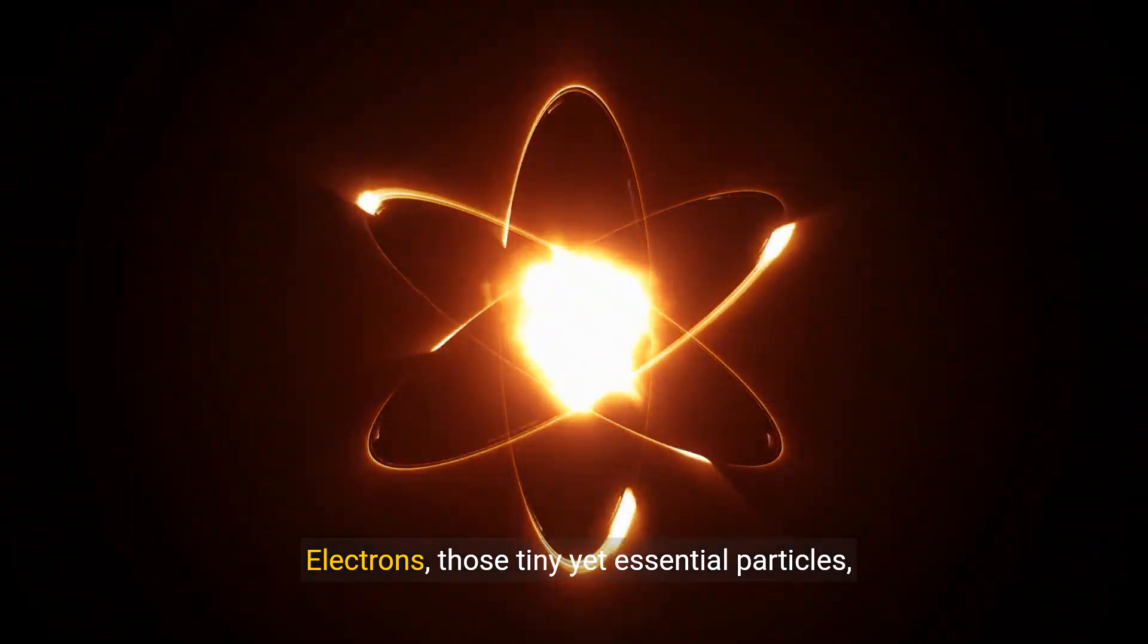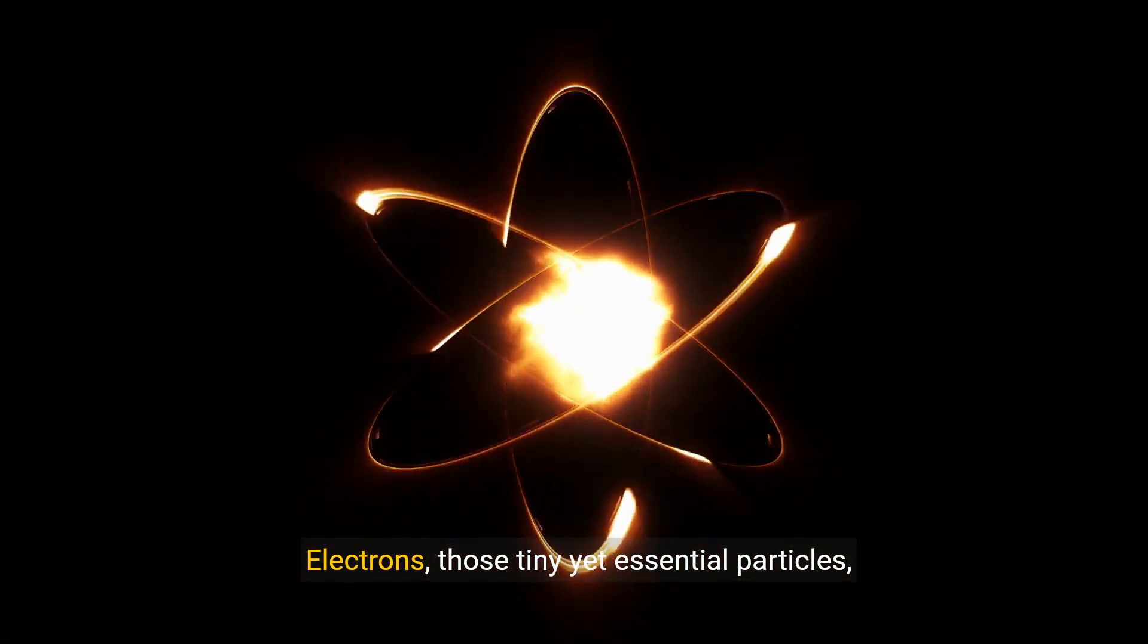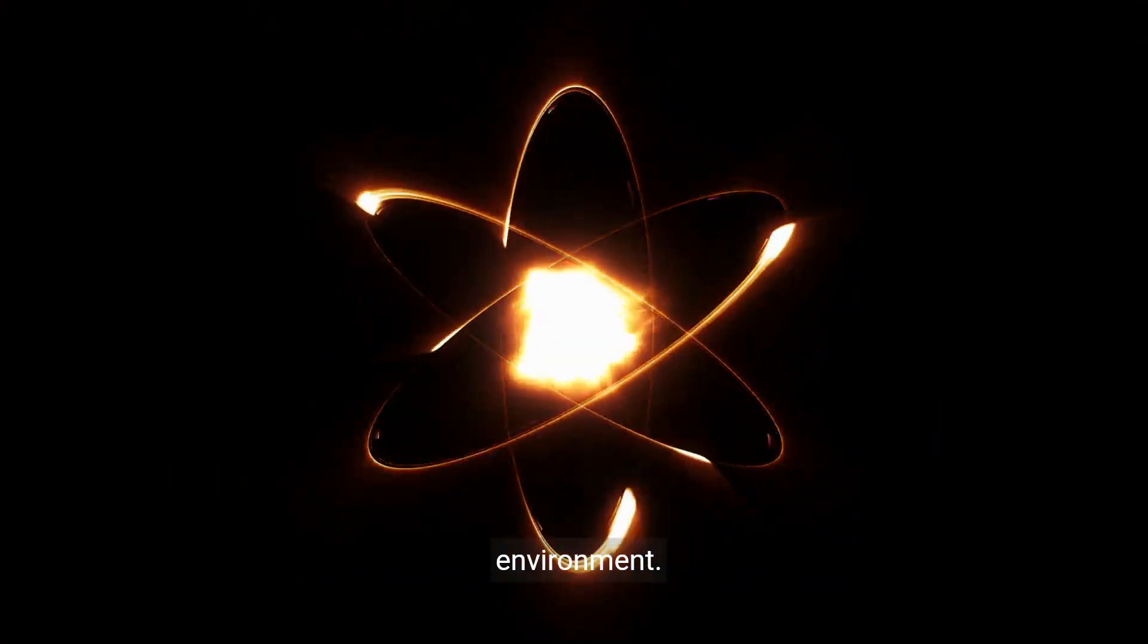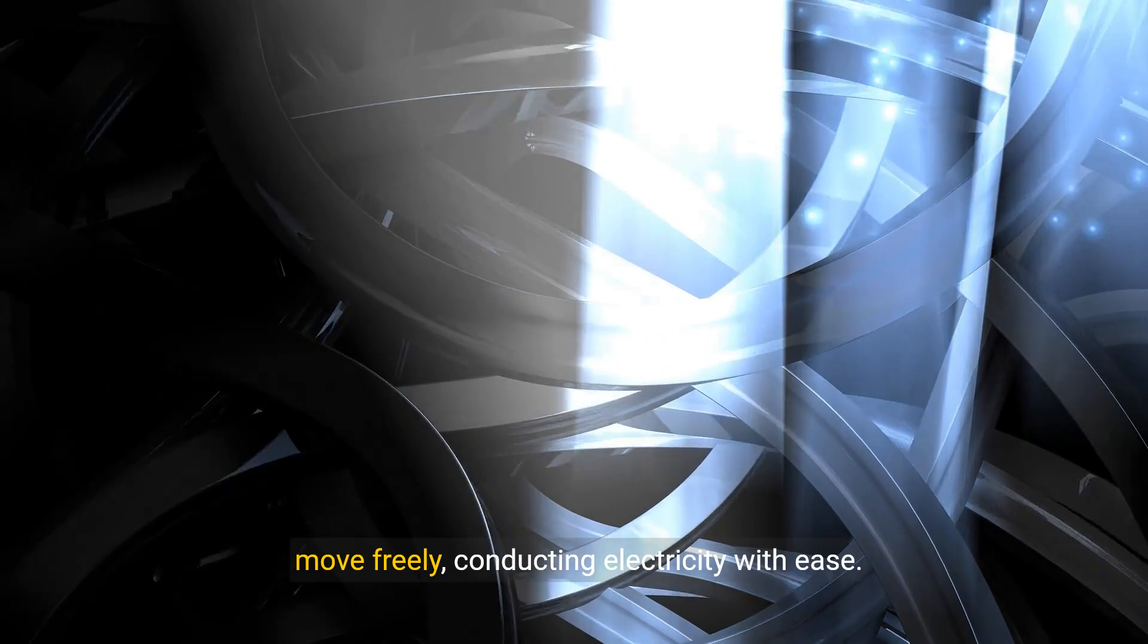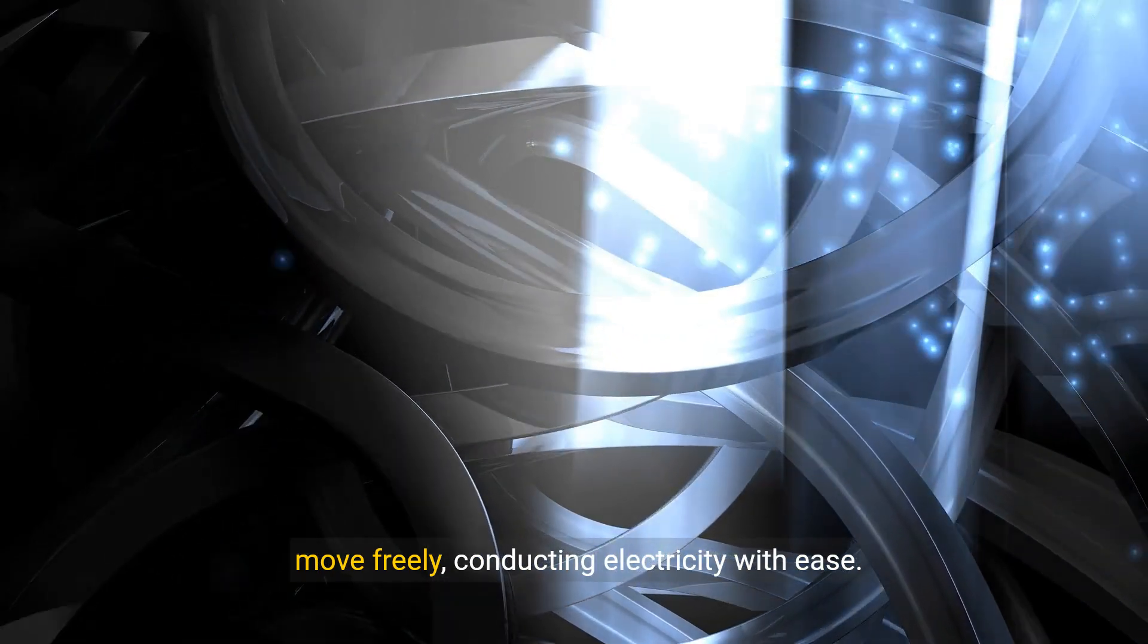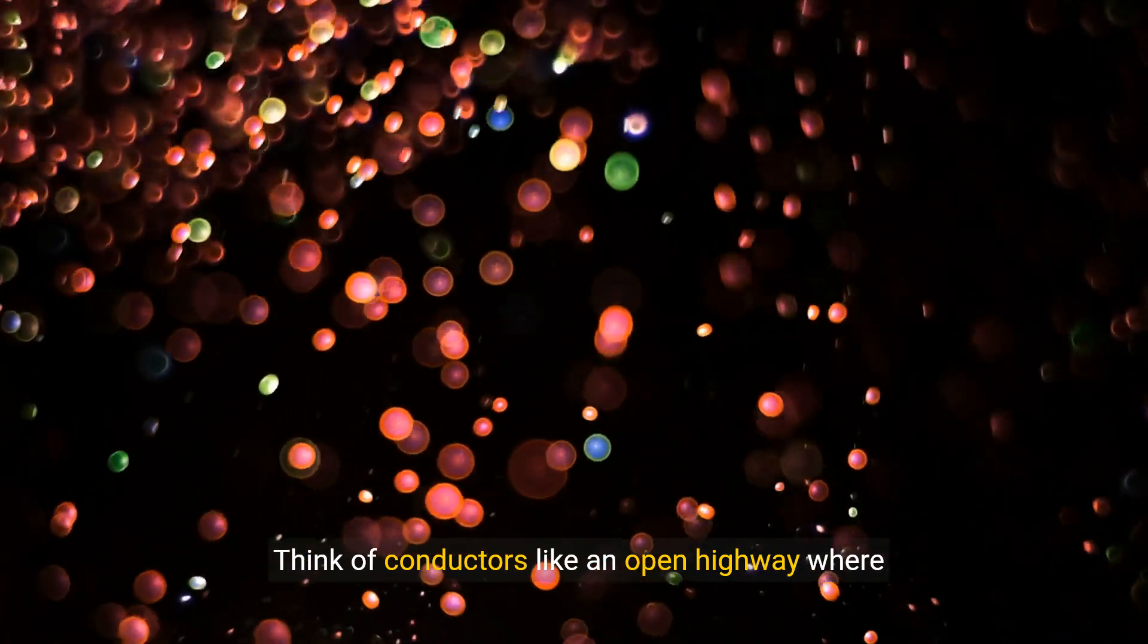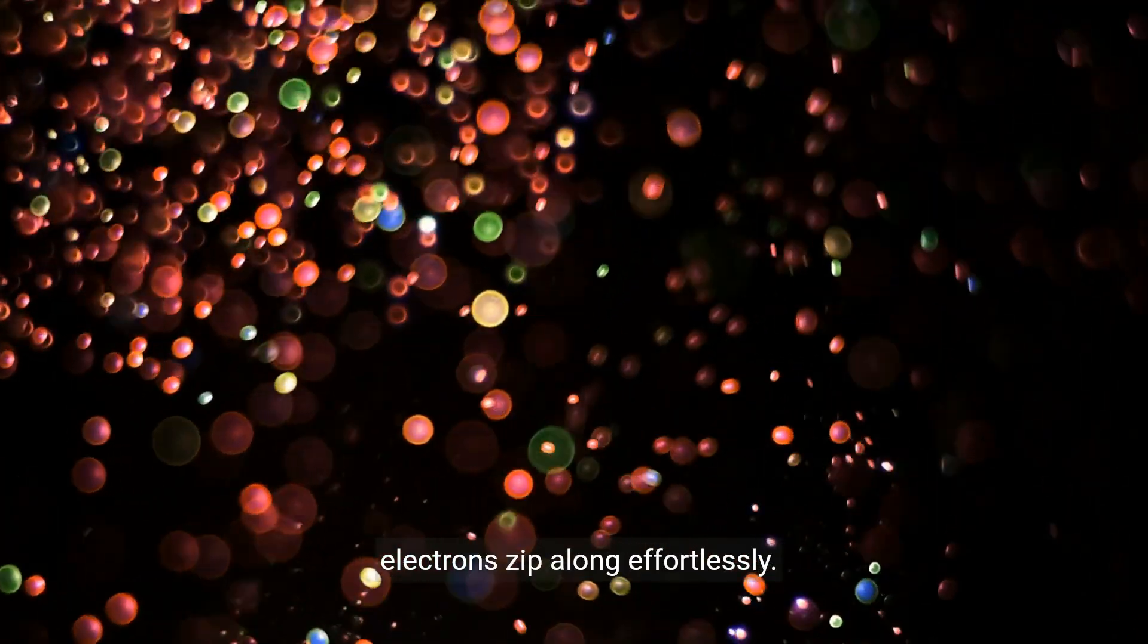Electrons, those tiny yet essential particles, reveal diverse behaviors depending on their environment. In conductors, these negatively charged particles move freely, conducting electricity with ease. Think of conductors like an open highway, where electrons zip along effortlessly.